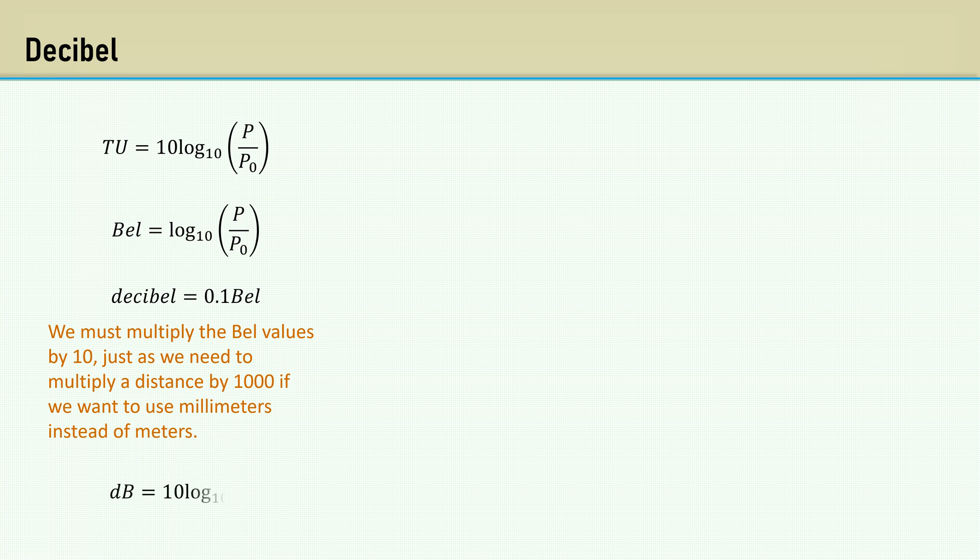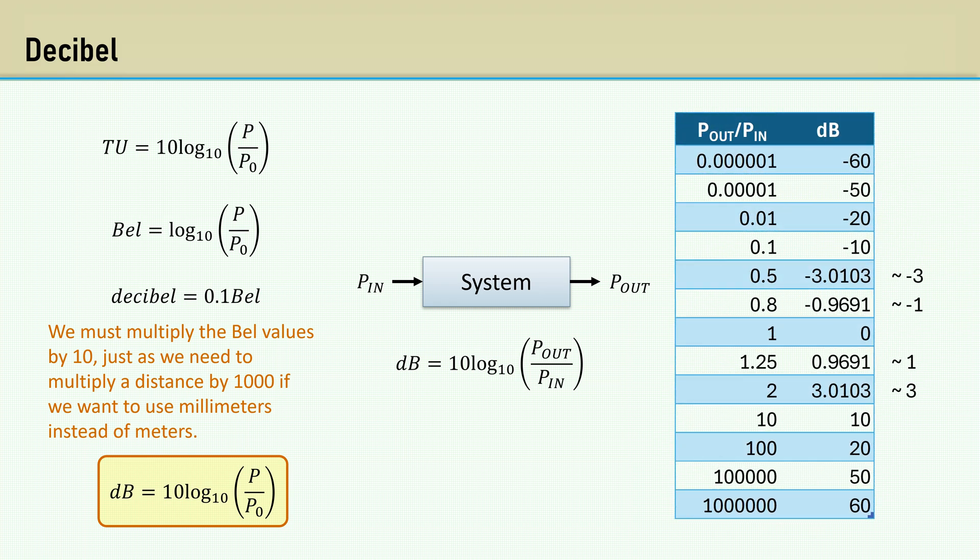Then the formula for decibels is 10 times the log base 10 of a ratio of powers. Imagine a system that had a specified power input and a specified power output. Here's a chart of various ratios of power out over power in and their associated decibel values.